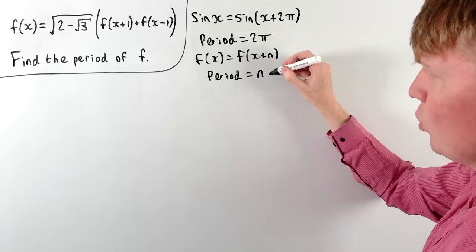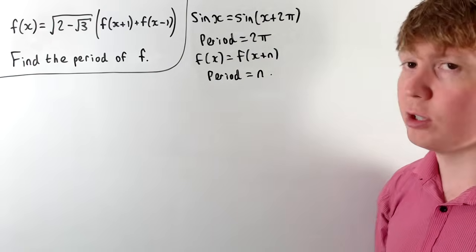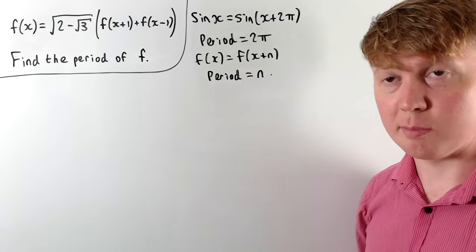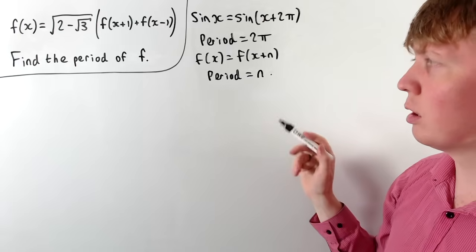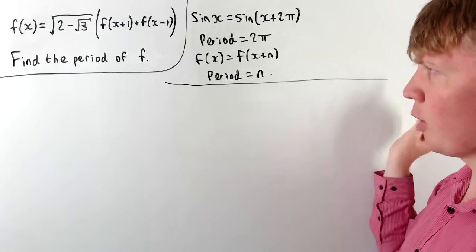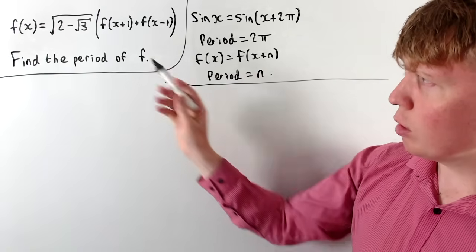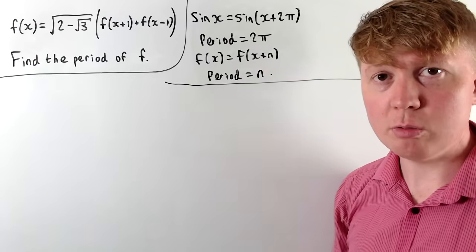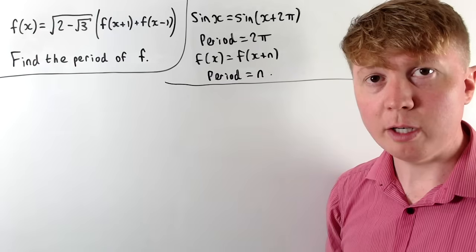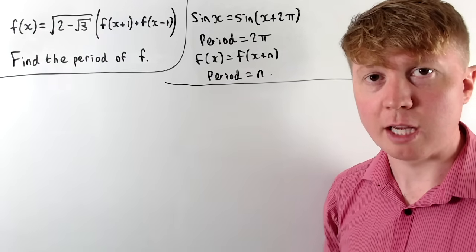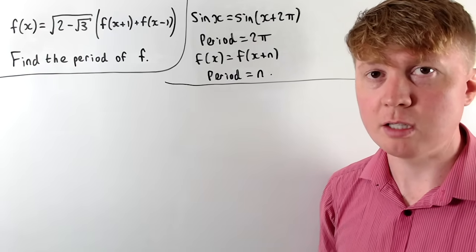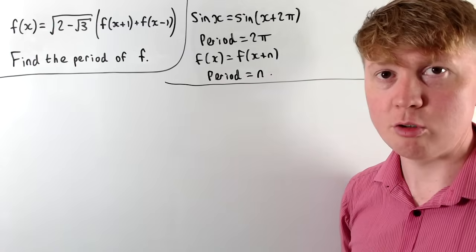We need n to be as small as possible. So you wouldn't say, for example, that sine x has period 4π or 6π, even though that does technically work — you go for the smallest possible value. So how would we go about solving this? It is actually possible to solve this using recurrence relations, but we're going to go about this in a way that we don't need to use any advanced techniques or quote any theorems, just working directly with this functional equation.